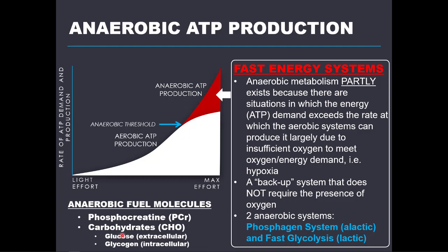Glucose is constantly circulating for various cells in the body, like muscle cells, to uptake and use as fuel. The other endogenous carb source is a stored form of glucose called glycogen — a bunch of glucose molecules bonded together to form a larger carb molecule. Glycogen is stored inside various cells, especially the muscle cell, where it is used as fuel for ATP production through glycolysis. Blood glucose is extracellular and glycogen is intracellular fuel.